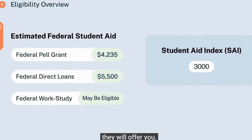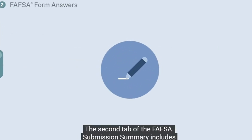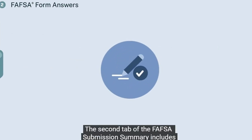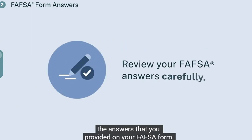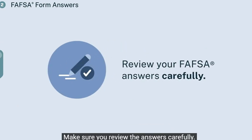The SAI is the number that your school will use to decide how much financial aid they will offer you. The second tab of the FAFSA submission summary includes the answers that you provided on your FAFSA form. Make sure you review the answers carefully.